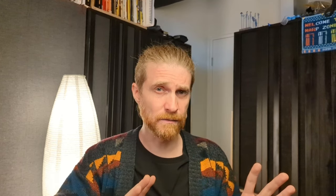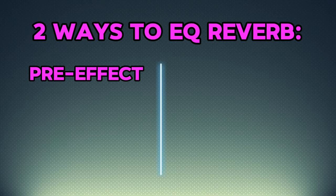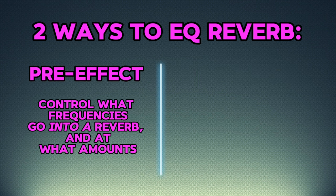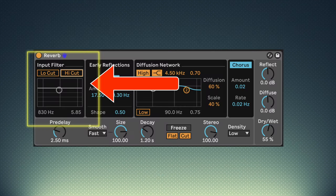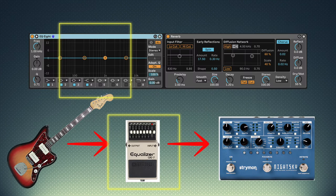The way to get around all of these issues is using EQ. We have two ways that we can EQ a reverb: pre-effect and post-effect. Pre-effect EQ is when we control what frequencies go into the reverb and at what amounts. This could be using a filter built inside the reverb itself, or it could be a separate EQ pedal or plug-in put between the instrument and the reverb's input. This allows us to remove any frequencies that might cause trouble.